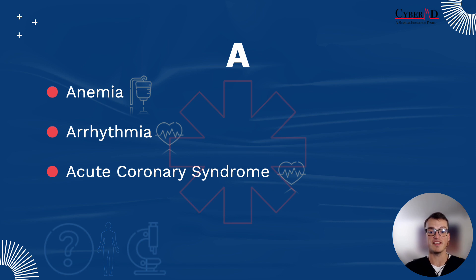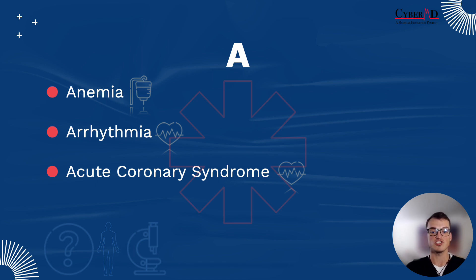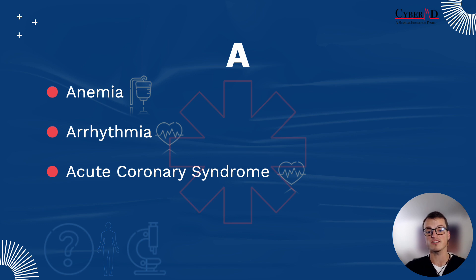To ensure you're not missing any of these diagnoses, you will almost certainly order a CBC with differential and an EKG on every patient with a chief complaint of weakness unless there is a very clear-cut etiology otherwise. In the inpatient setting, you may want to trend hemoglobin over time to make sure labs are stable before discharge, especially if the patient received blood products for anemia as the source of their weakness.